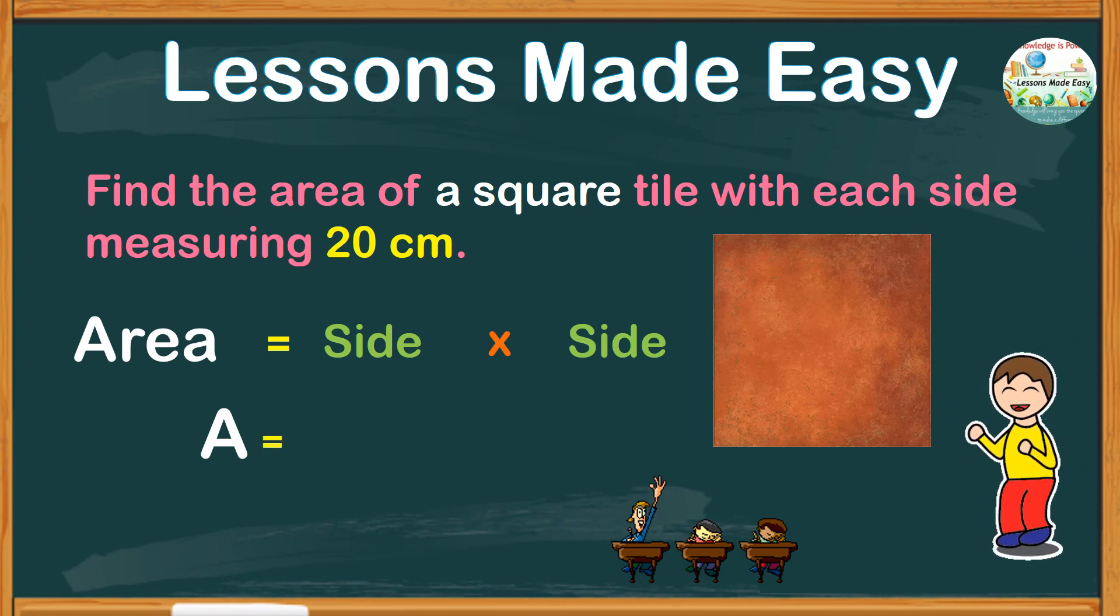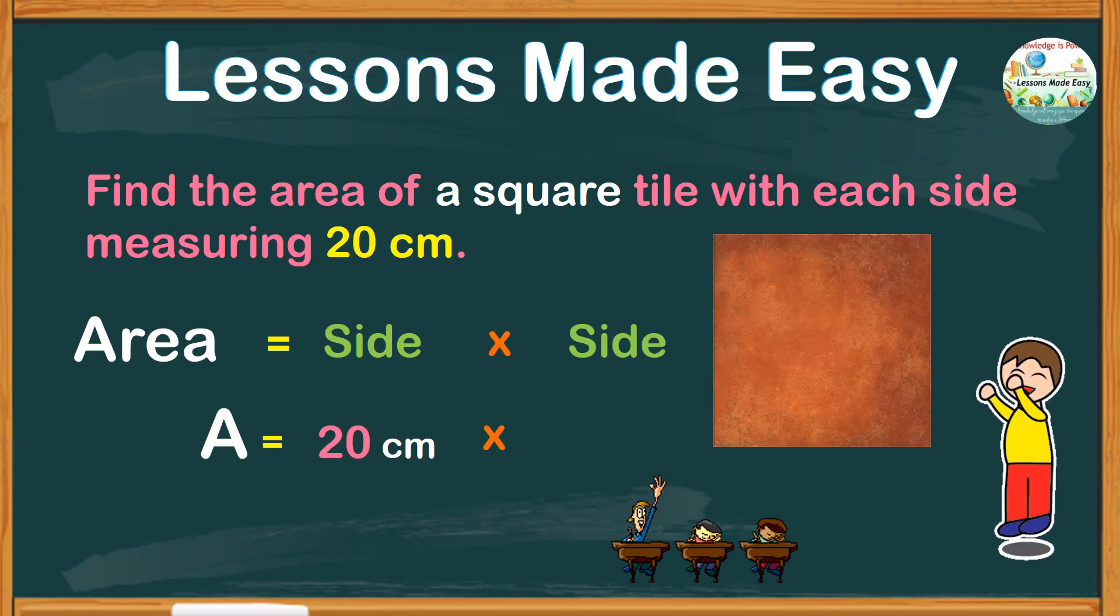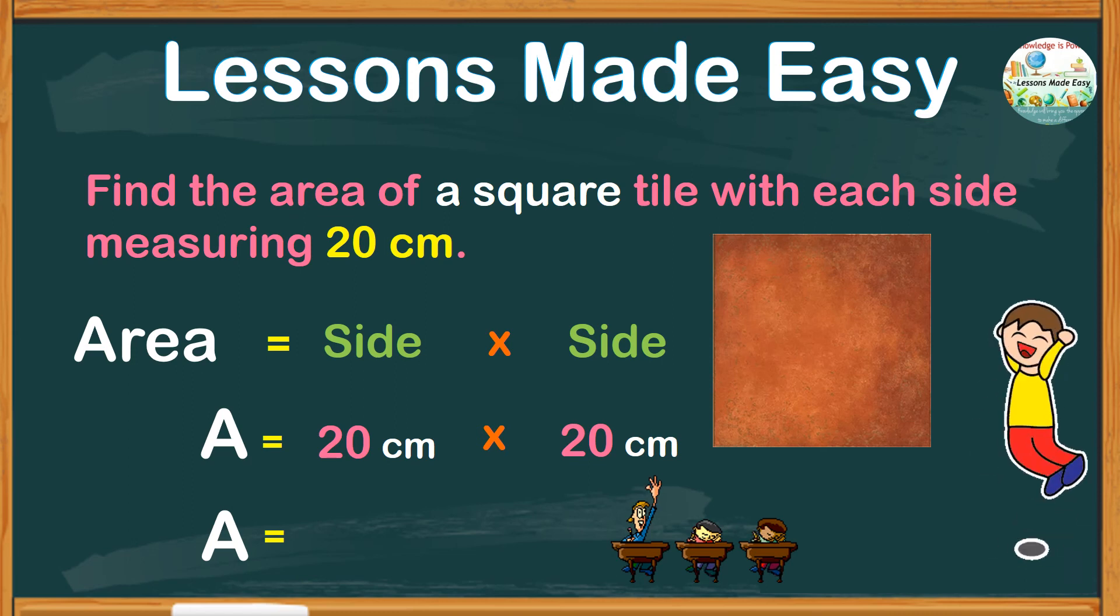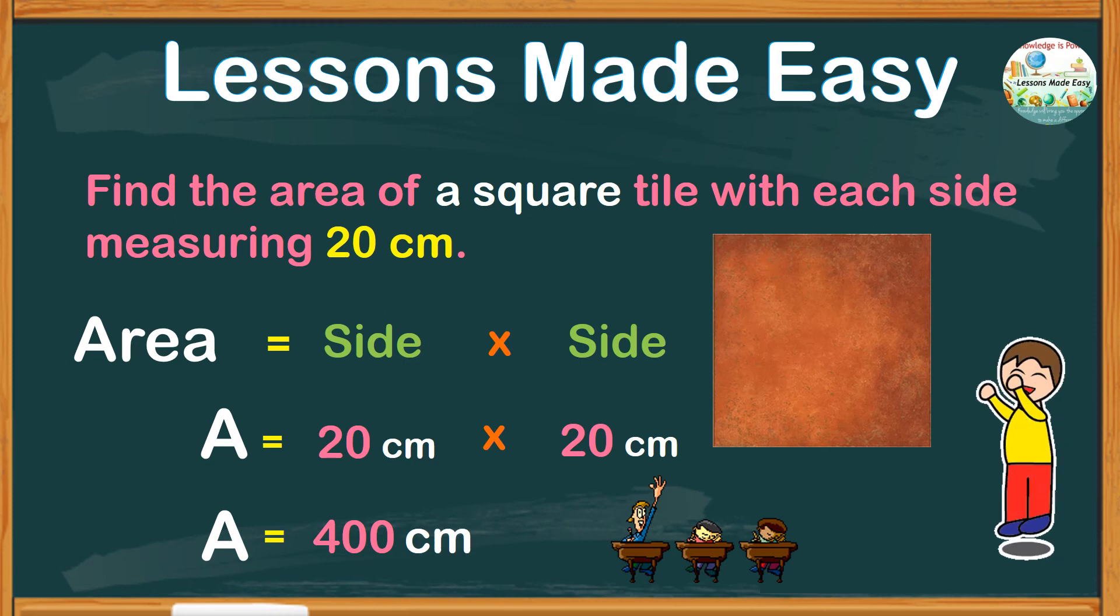Area equals 20 centimeters in one side. Then multiply with the same number for the other side. And so area is the product of 20 times 20, which is 400, with the unit centimeters that goes with 2 as the exponent. Our area would be 400 square centimeters.